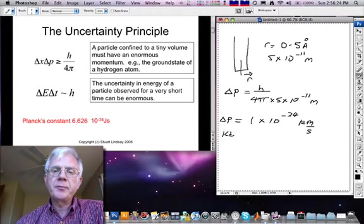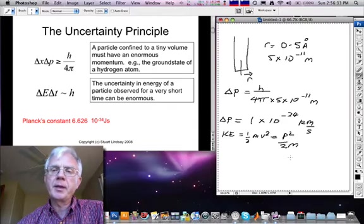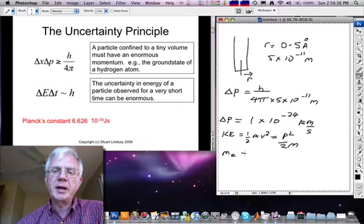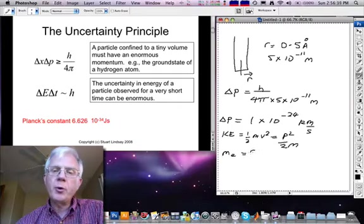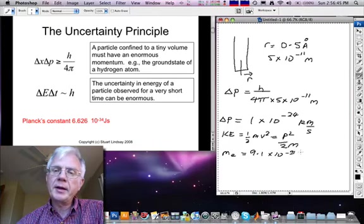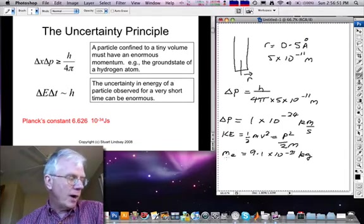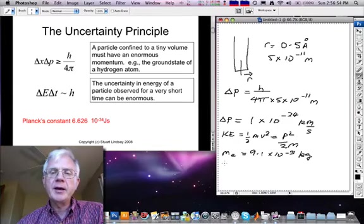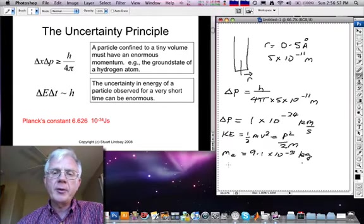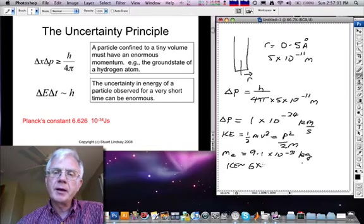The kinetic energy, which classically is given by a half mass times velocity squared, which is the same as p squared over 2m, one can calculate, given that the mass of an electron is 9.1 times 10 to the minus 31 kilograms, you'll find all these numbers in Appendix A of the book. And plugging this in one then gets a value for the kinetic energy of around about 6 times 10 to the minus 19 joules.